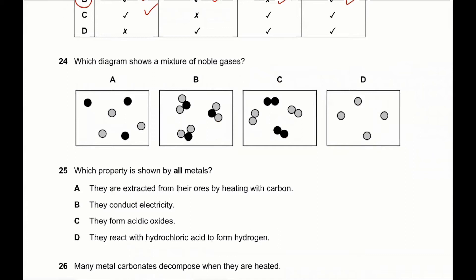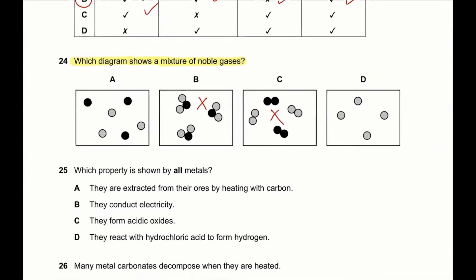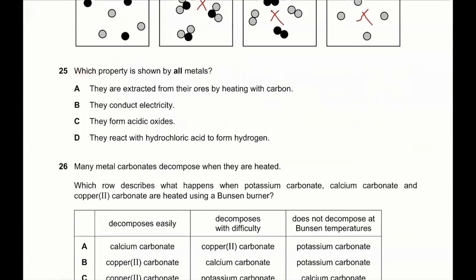Question 24: which diagram shows a mixture of noble gases? Noble gases are monoatomic. Option B is wrong because it shows a compound (a molecule). Option D shows a monoatomic gas but it's not a mixture. So A is the correct answer.